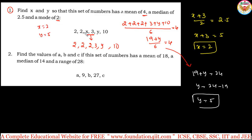Therefore, x = 2 and y = 5. First use the median to find the middle value, then use mean and mode to find the other unknowns. We are using the properties of mean, median, and mode to solve these problems.